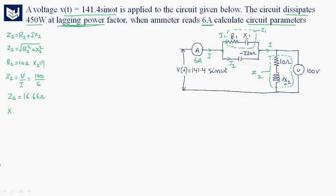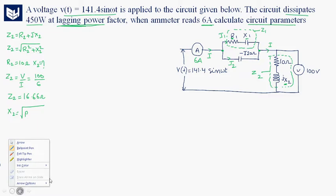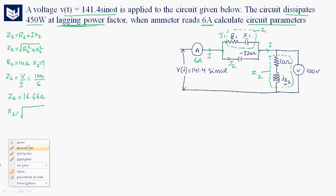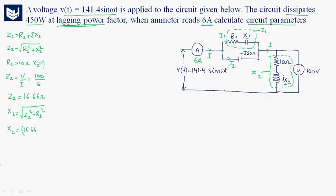Now we can find X2: X2 = √(Z2² − R2²). Z2² = 16.66² and R2 = 10 ohms, so R2² = 100. Solving this, we get X2 = 13.33 ohms.